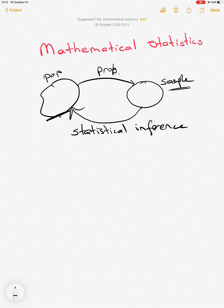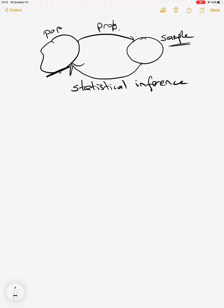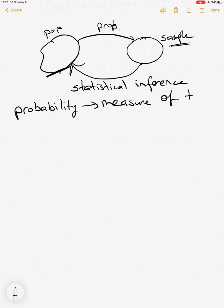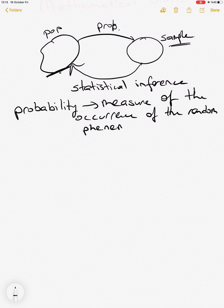In statistics we are dealing with uncertainties — we want to measure those uncertainties and then solve them. The measure of occurrence or measure of uncertainty is probability. We will use probability a lot in statistics to be able to measure these uncertainties. It is a measure of the occurrence of random phenomena, and we use probability functions to obtain those probability values.